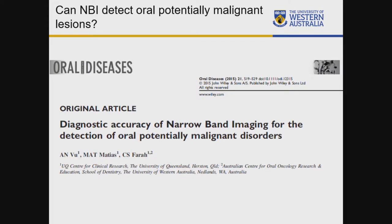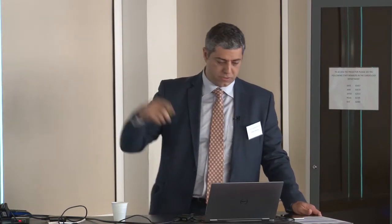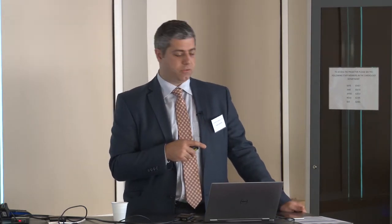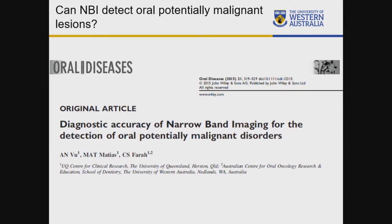Can NBI detect oral potentially malignant lesions? This is a particular area of interest for me — I look at potentially malignant lesions every day in my clinic. Understanding the basic mechanism of NBI: it requires angiogenesis. With early cancers, the majority have new blood vessel formation. But early changes like mild dysplasia may not require angiogenesis — you get epithelial changes limited to the epithelium without necessarily any vascular changes beneath. So we asked: can NBI still detect oral potentially malignant lesions?